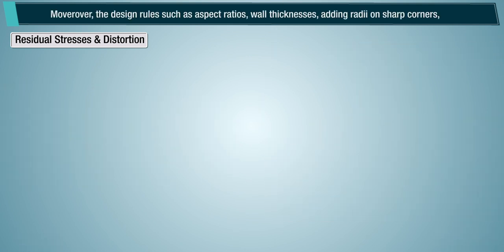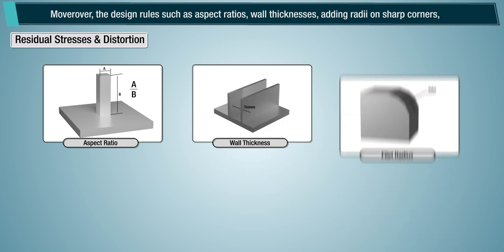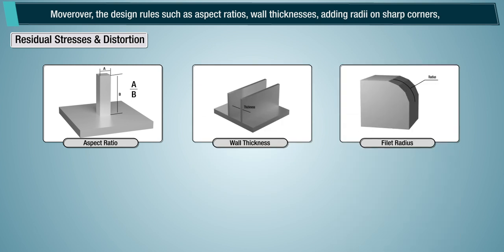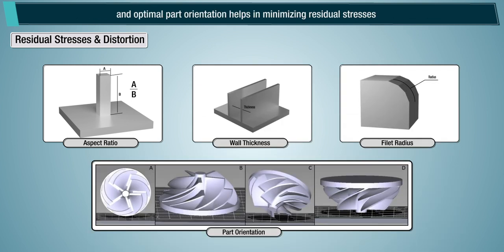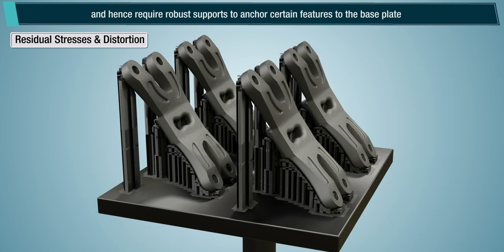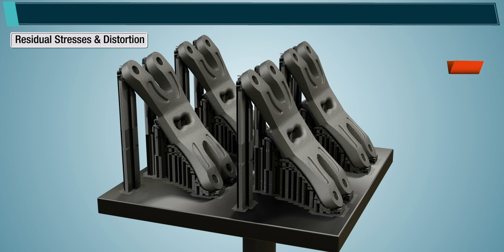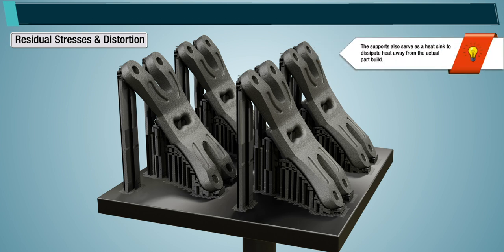Moreover, design rules such as aspect ratio, wall thicknesses, adding radii on sharp corners, and optimal part orientation help in minimizing residual stresses. However, residual stresses and distortion cannot be completely eliminated, and hence require robust supports to anchor certain features to the base plate. The supports also serve as a heat sink to dissipate heat away from the actual part build.